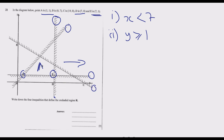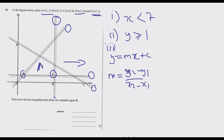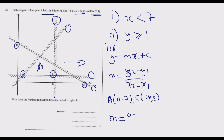For the remaining two lines that slope upward and downward, we need to find the gradient using the general equation y = mx + c. Starting with the line passing through B and C: B is (0,7) and C is (14,0). The gradient M equals (0 − 7) over (14 − 0), which gives us −7 over 14, which is −½.